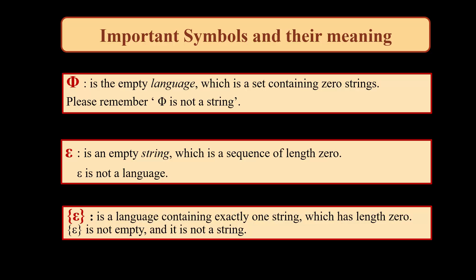These are some important symbols to consider. Phi is the empty language, which is the set containing zero strings — please remember phi is not a string. Epsilon is a string which is empty and the length of this string is zero. Epsilon is not a language, but if we put epsilon in curly braces it is a language containing exactly one string of length zero, and epsilon in curly braces is not empty and is not a string.